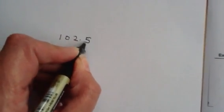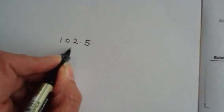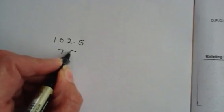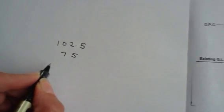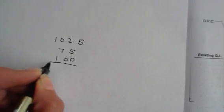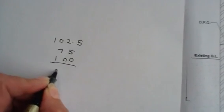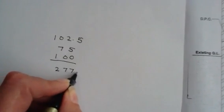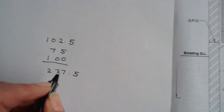we have a brick wall of 102.5, we have a cavity fill of 75, and we have a blockwork skin of 100. So if we add this together we get 277.5.